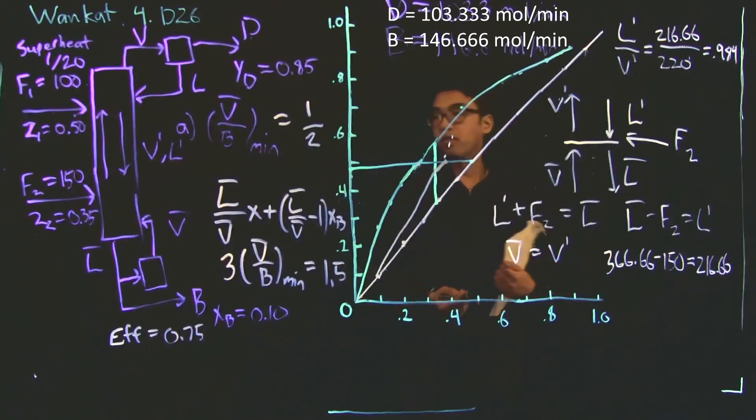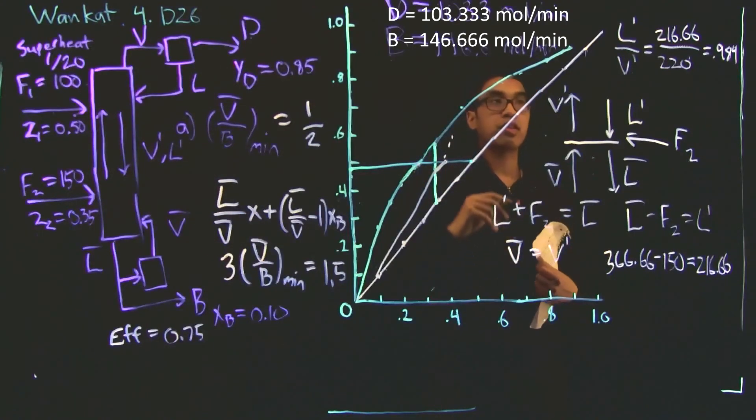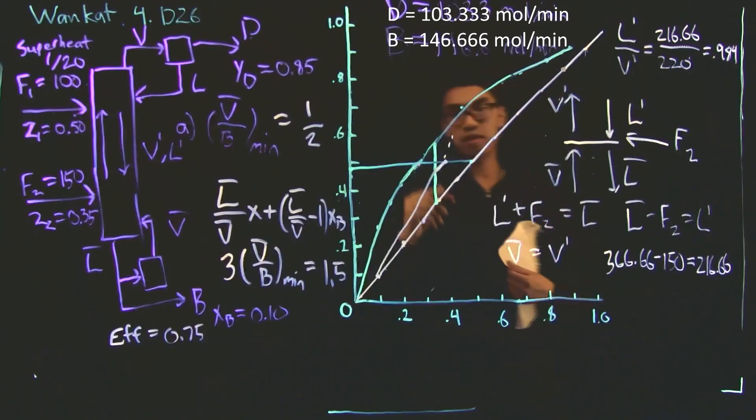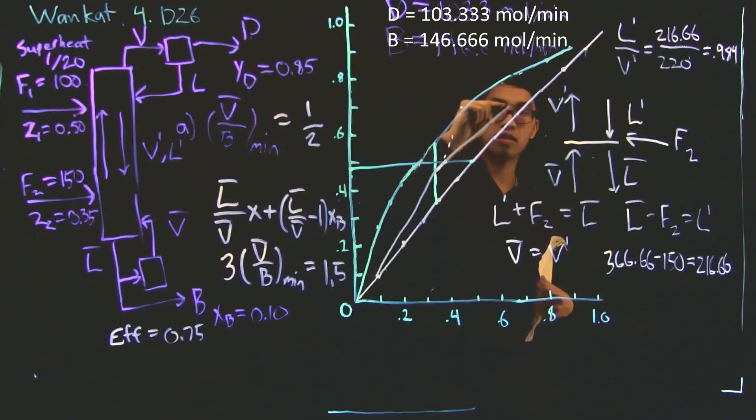Now the third operating line, we could calculate it by calculating the flow rates at the top of the column. But we don't need to do that, because we know that it has to pass through the point 0.85, which is here. And since it needs to intersect with the middle operating line at this feed line, then we can simply just trace the line. And now we're ready to step down using the McCabe-Thiele method.